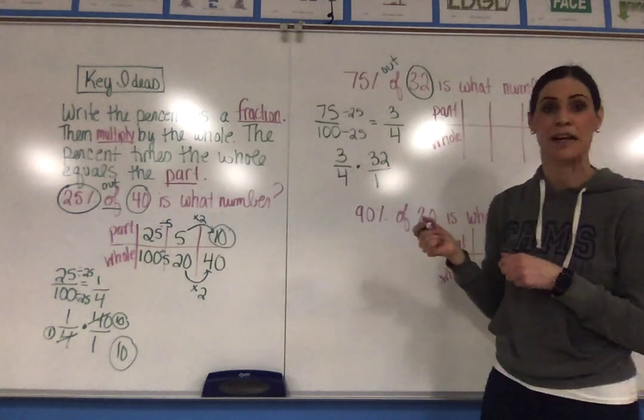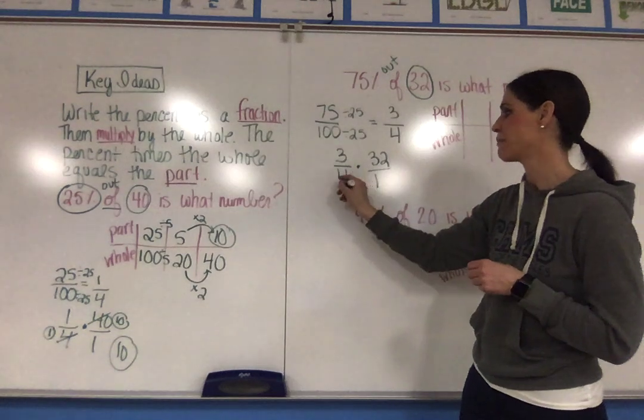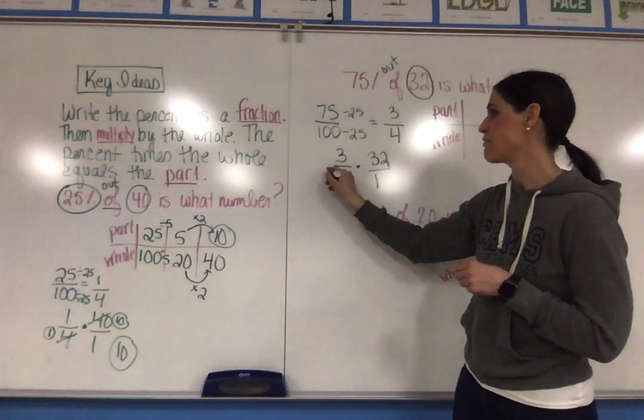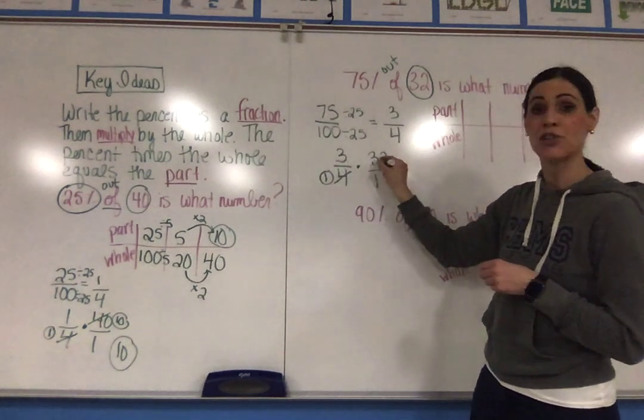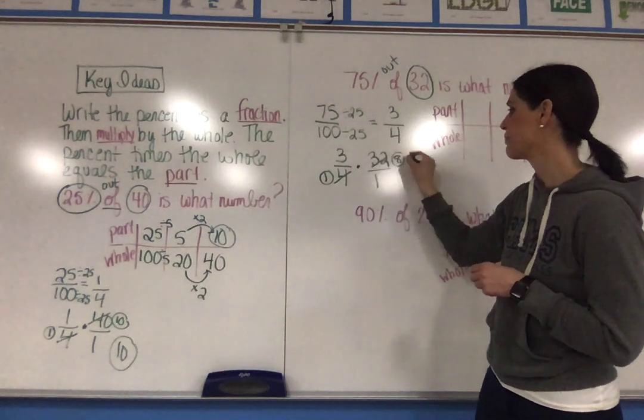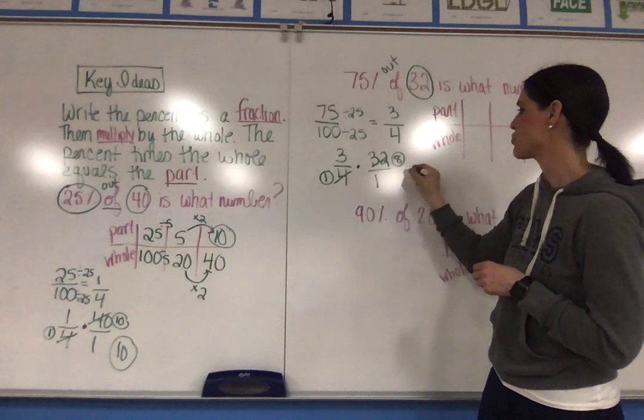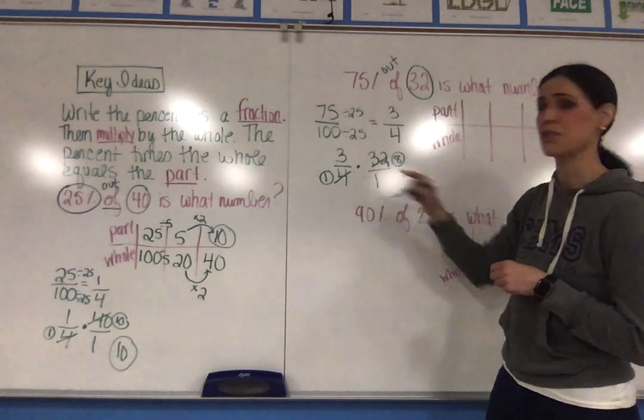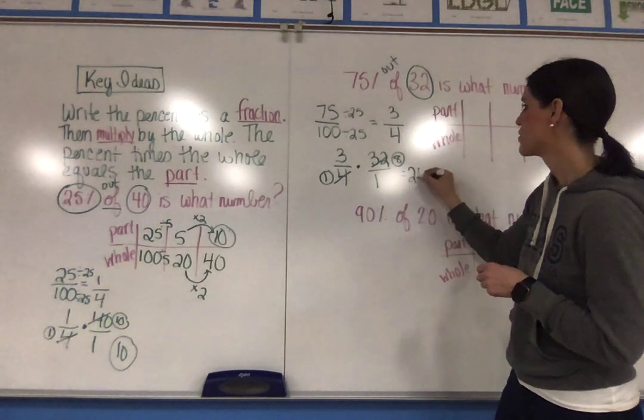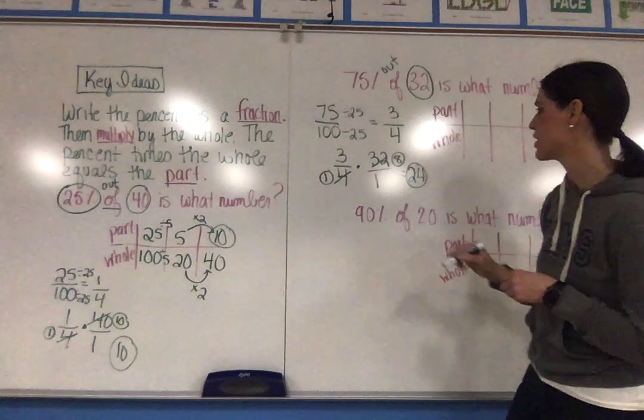Again, I'm going to cross reduce by dividing by the greatest common factor. I can divide 4 by 4, which is 1. 32 divided by 4 is 8. I multiply the two numerators together, which is 24. The two denominators is 1. So I know that the part is 24.